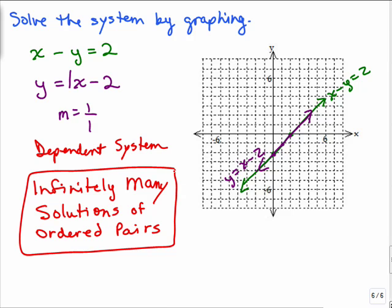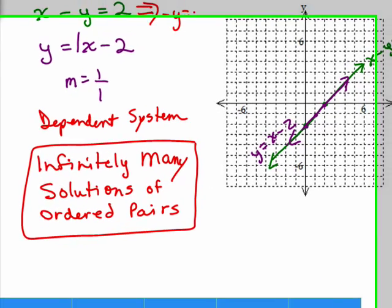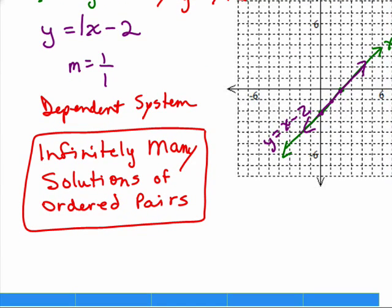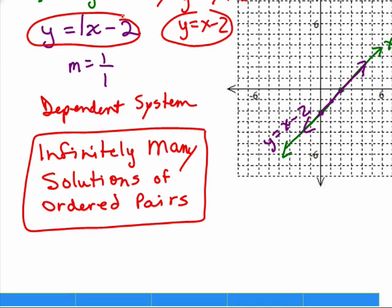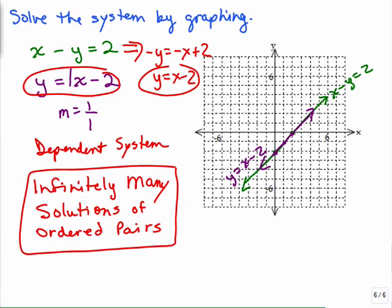In fact, it's not any old ordered pairs, right? They're really all the ones on this line. Now, if I would have taken each of these equations and put it in slope-intercept form, notice if I would have subtracted x from both sides, I would get negative y equals negative x plus 2. And then if I change the signs on both sides, which is multiplying both sides by negative 1 or dividing both sides by negative 1, I get y equals x minus 2. You would notice that is the same as this other line to begin with. So you can verify it really is the same equation.